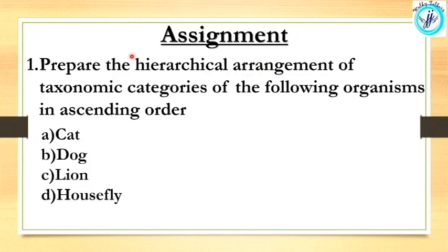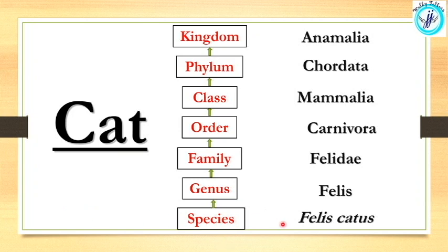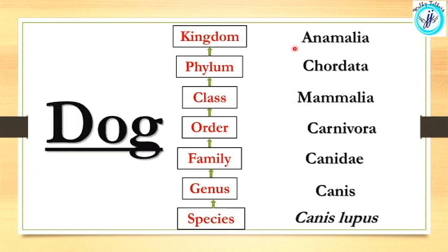The assignment involves a hierarchical arrangement of taxonomic categories in ascending order for: cat, dog, lion, and housefly. For cat: species is Felis catus, genus is Felis, family is Felidae, order is Carnivora, class is Mammalia, phylum is Chordata, kingdom is Animalia. For dog: species is Canis lupus, genus is Canis, family is Canidae, order is Carnivora, class is Mammalia, phylum is Chordata, kingdom is Animalia.